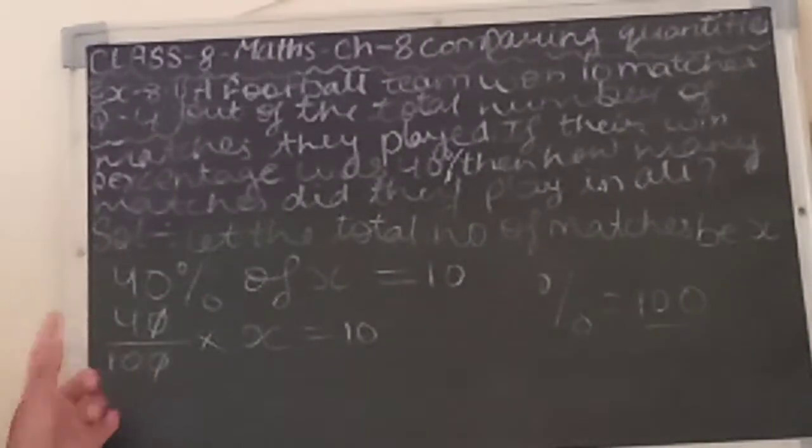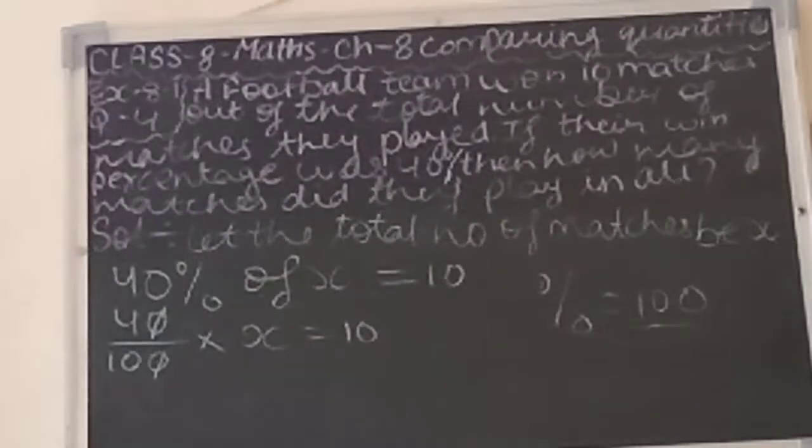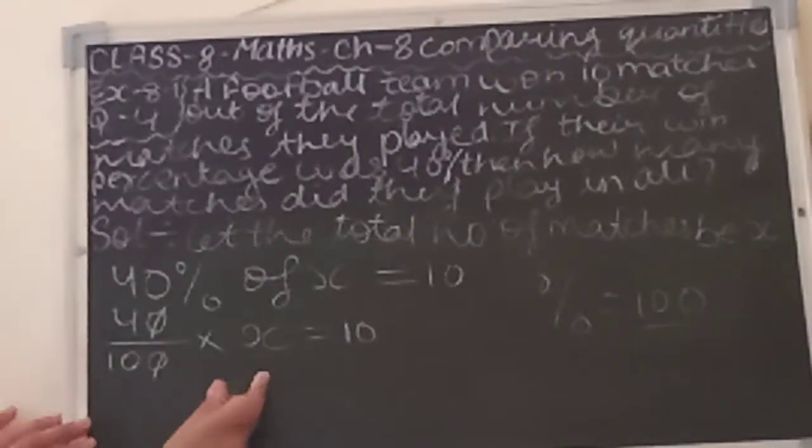Simplifying, 4 into x equals to 100. This x is here. We will leave this side.